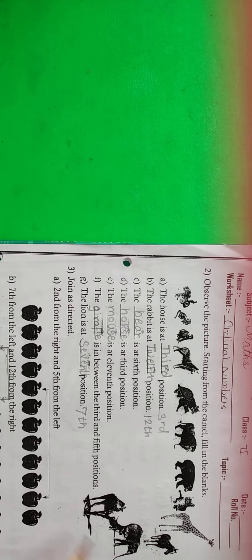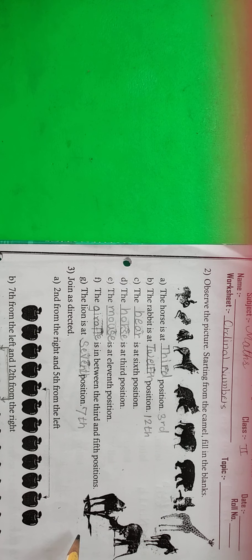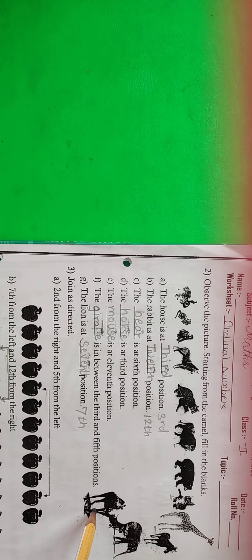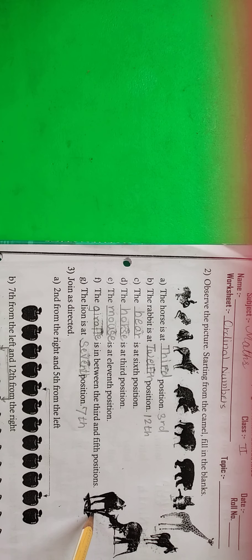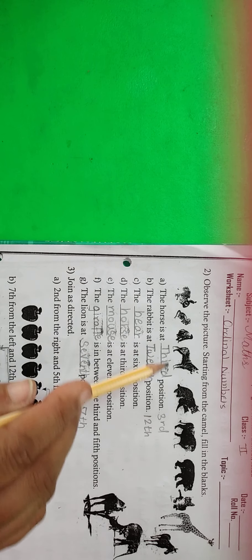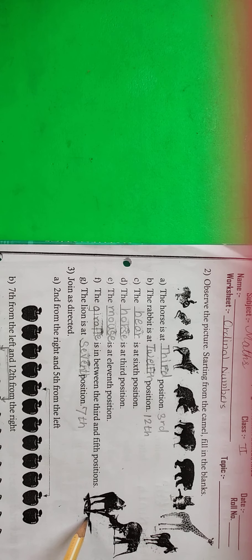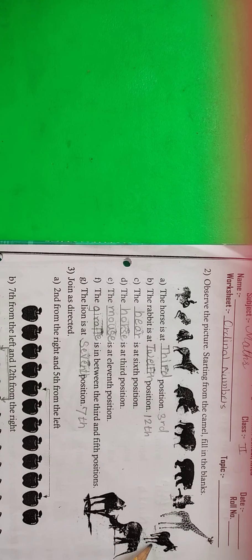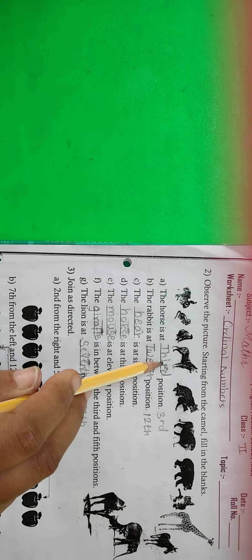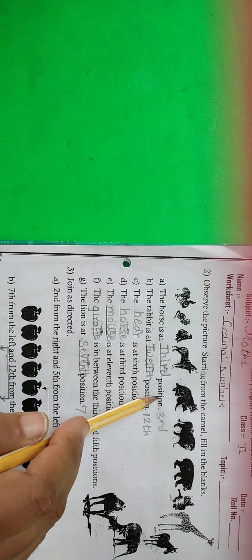Now see. First, you observe this picture. Animals are there, starting from the camel. Camel is the first — camel is on the first position. The horse is at the dash position. Where is the horse? We will start from here. Third position. Then you write here the spelling of third. The horse is at the third position.